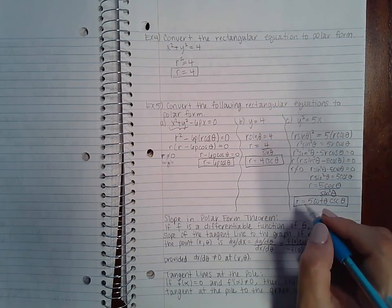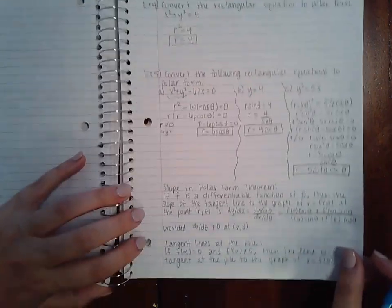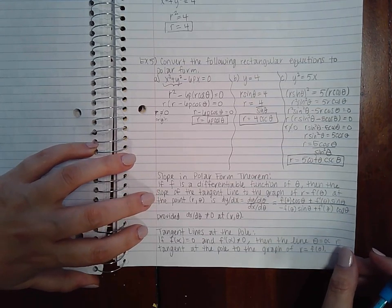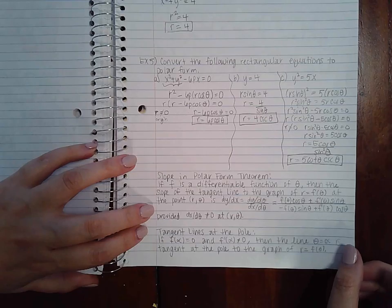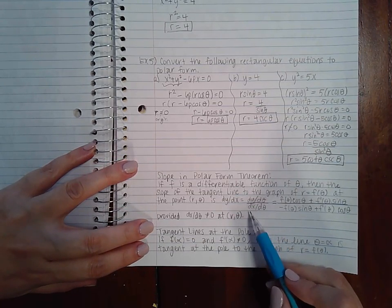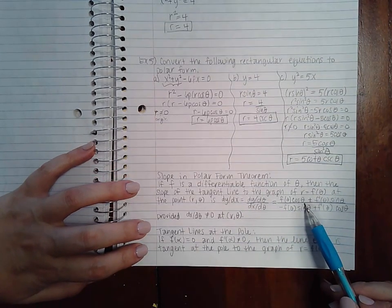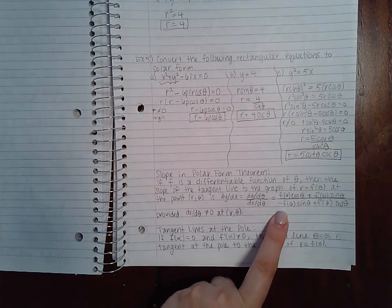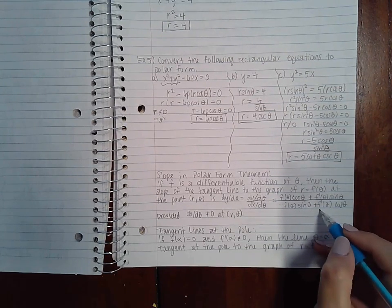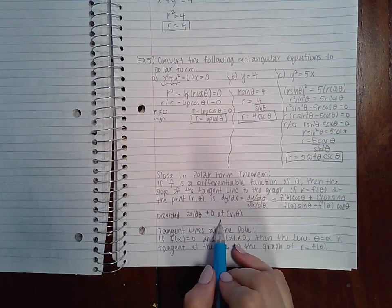So there we go. Now in polar form, the theorem says if f is a differentiable function of theta, then the slope of the tangent line to the graph of r equals f of theta at the point (r, theta) is dy/dx, which is dy d theta over dx d theta: f of theta cosine plus f prime of theta sine over negative f of theta sine theta plus f prime theta cosine theta, provided of course that dx d theta does not equal zero at that point.